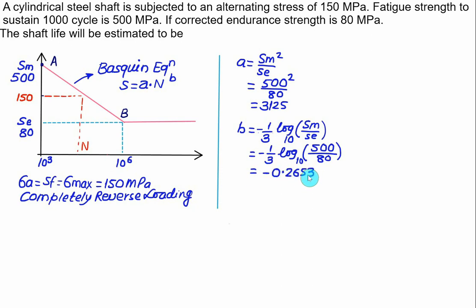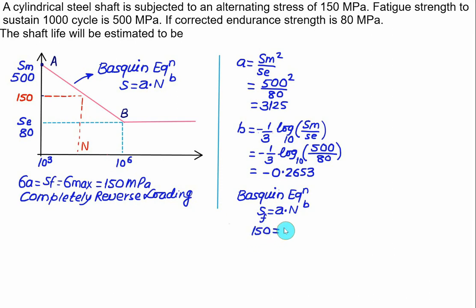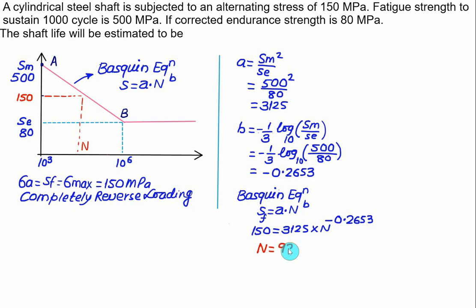Both constants are known. Use the Basquin equation: substitute SF = 150, A = 3125, and B = −0.2653. Solving gives N ≈ 93,529 cycles. If you practice more questions, you will automatically remember the formulas for A and B — this is a very simple step in Basquin to find the number of cycles.